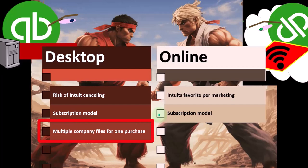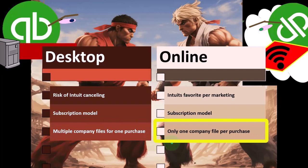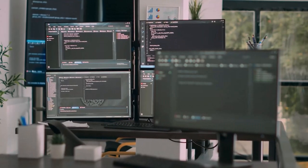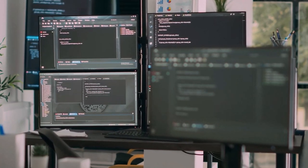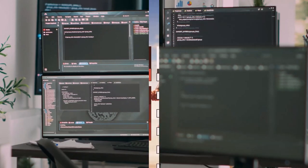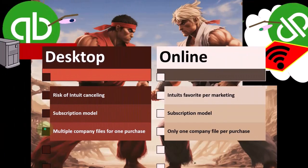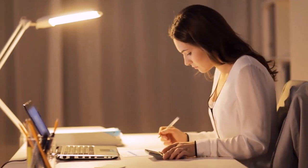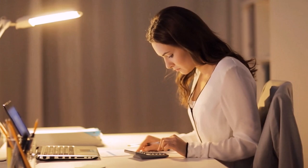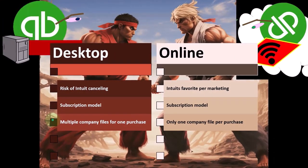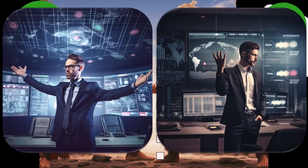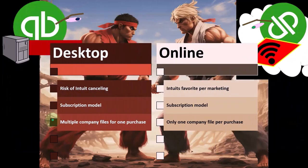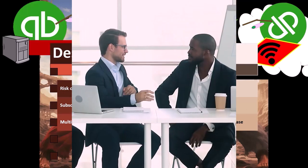With desktop, you get multiple company files for one purchase, versus only one company file per purchase with the online version. This is beneficial if you're a bookkeeper managing multiple companies — you can handle all of them with one software purchase, similar to how you can create multiple Word documents with one copy of Microsoft Word, where the Word documents are equivalent to company files.